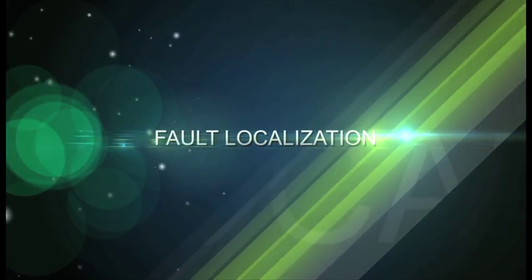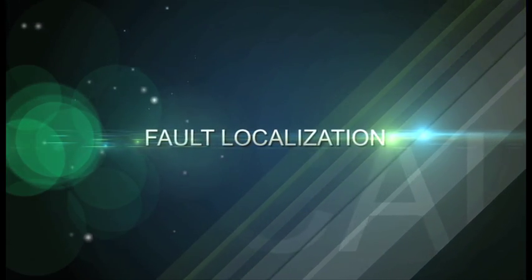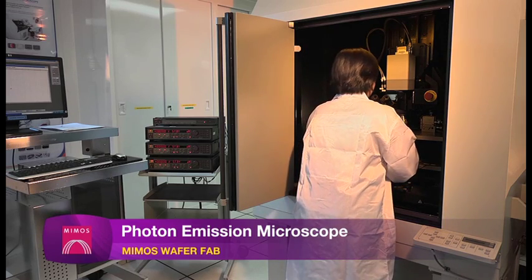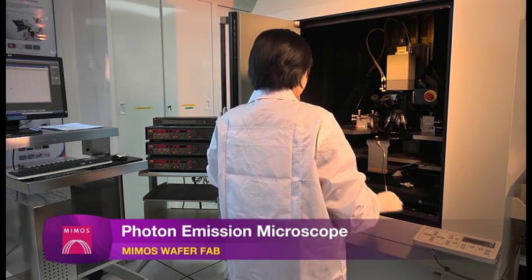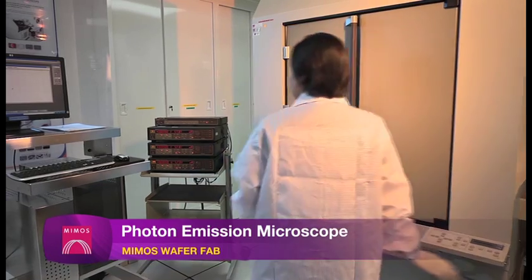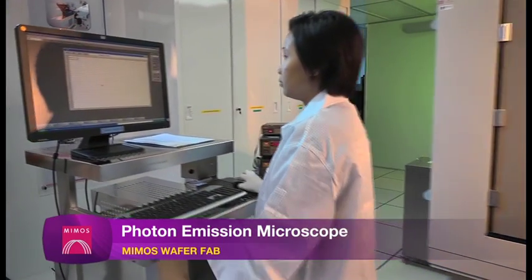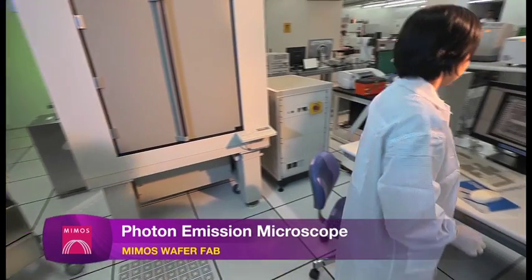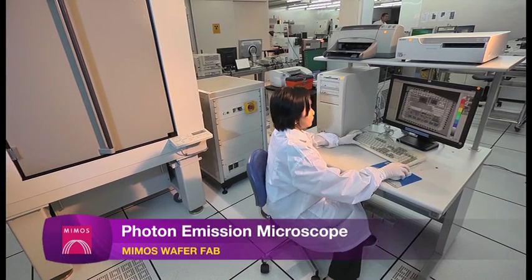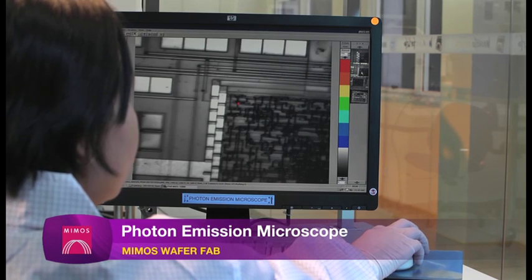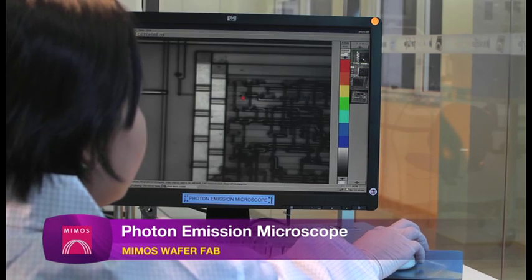Fault localization is an important step to pinpoint or localize the failure site. Photon emission microscope PEM uses detection of photonic emissions technology to localize leakage current defects at die level. Equipped with cool CCD camera, PEM is capable to locate very faint photon emission in all ranges from the visible to the near-infrared region NIR.